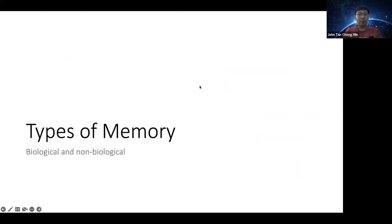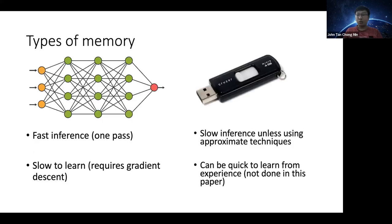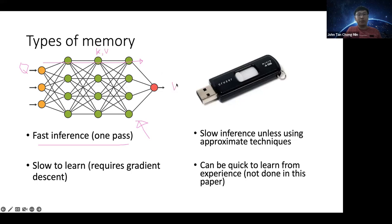Let's move on to the various types of memory. The first is biological, which is neuron-based. The second is non-biological, which is more like read-write, hard drive, or computer storage memory. The biological type is like a neural network — you take a query, and the key and value are inside the network; through one pass you get your value out. It's fast to execute. The downside is it's slow to learn — you need many epochs or iterations for the weights to converge.